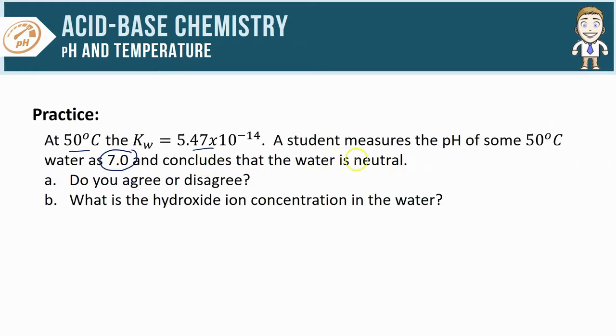For part A, we should be disagreeing because a pH of 7 only corresponds to a neutral solution at 25°C, and here the temperature is up at 50°C.